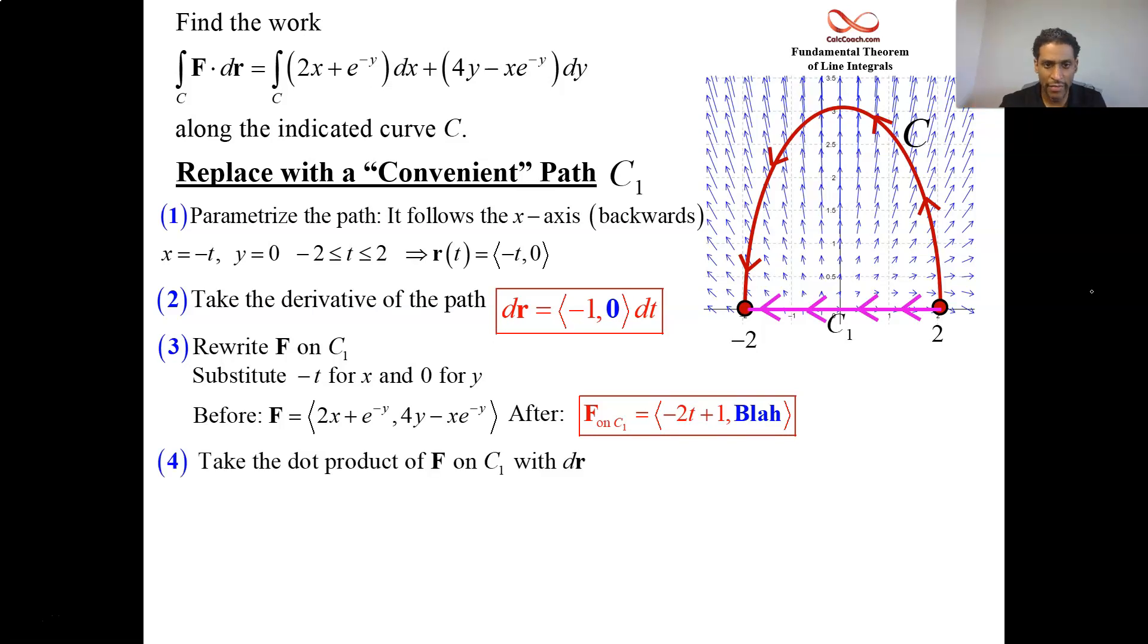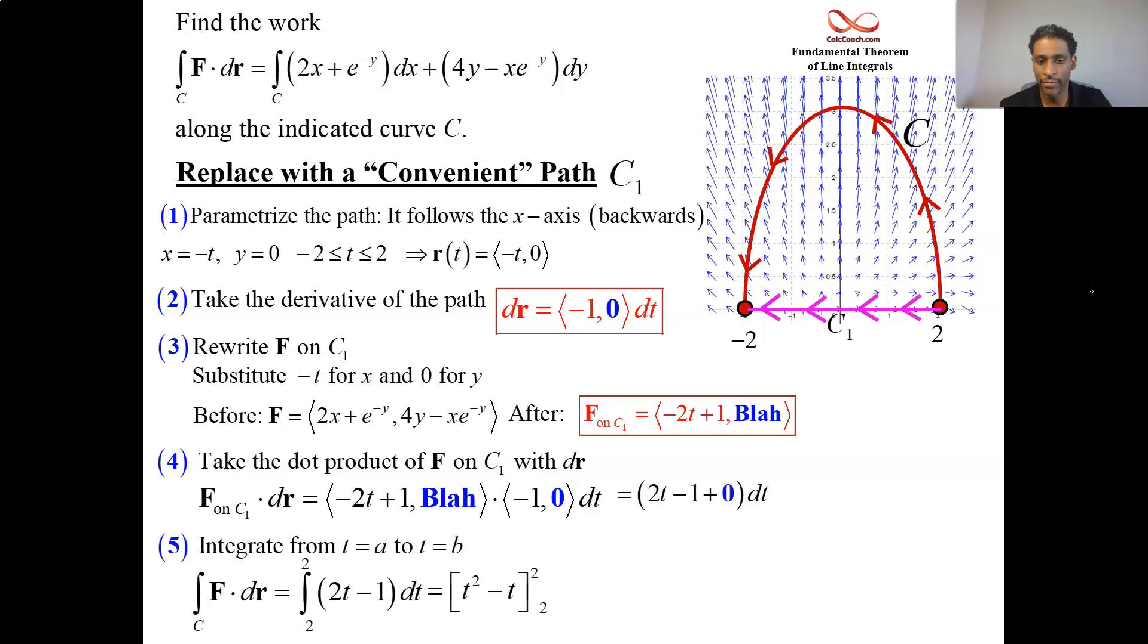So you take your dot product, and you get 2t minus 1. That's what you're integrating. With respect to t, as t goes from minus 2 to 2. So you get 4 minus 2. Be careful here. On the second way, by plugging a negative 2, you get 4 plus 2. Subtract. 4s cancel out. And you get that same minus 4 from before.